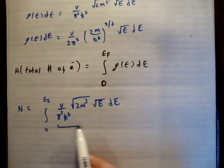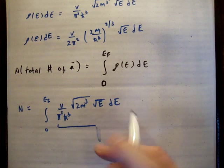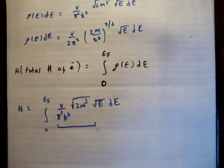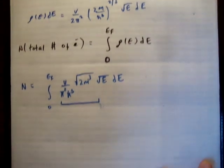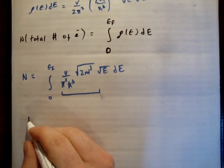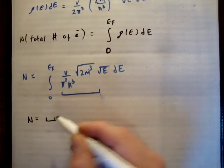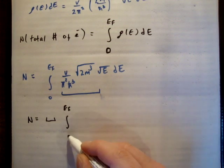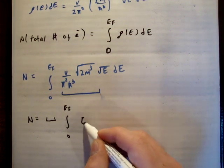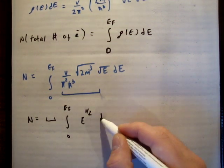We know that all of this here is a constant, so we can bring that outside the integral. I'm not even going to look at our constants from now on. So we can say that N equals our constants, and then we have our integral from zero to EF of E to the one-half dE.